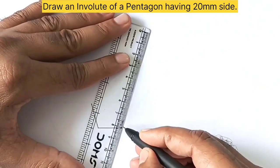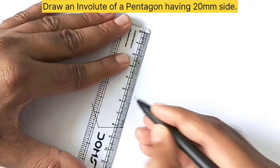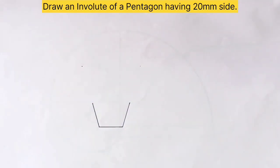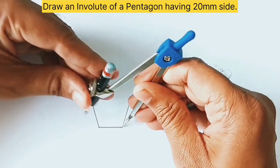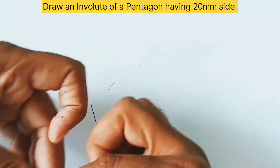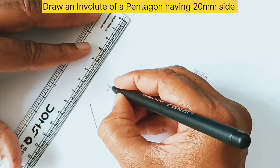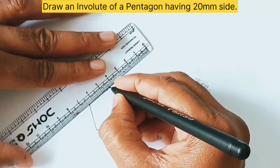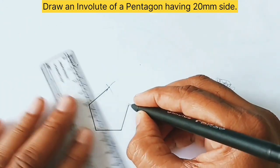Next, take a compass and set a length equal to 20mm. Using this point as a center, cut an arc as shown. Join this point, which completes the pentagon.